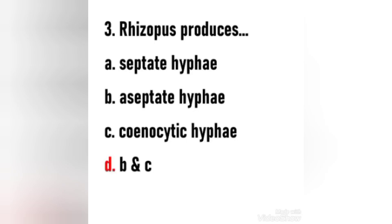Third question: Rhizopus produces — septate hyphae, aseptate hyphae, coenocytic hyphae, or both B and C? The right answer is option D, B and C. Rhizopus species grow as filamentous branching hyphae that generally lack cross walls. They reproduce by forming asexual and sexual spores. In asexual reproduction, sporangiophores are produced inside a spherical structure known as a sporangium.